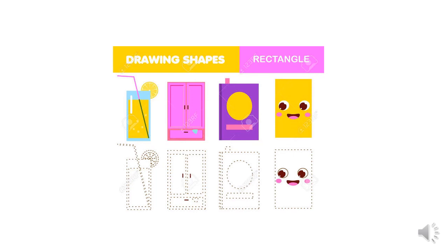Here are some items in a rectangle shape: this rectangle, this book, and this cupboard.